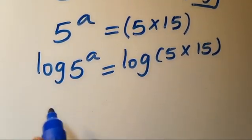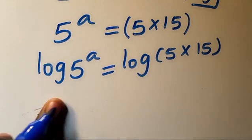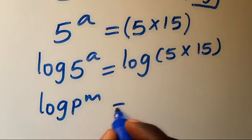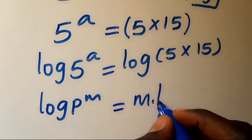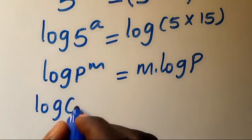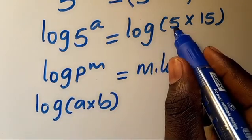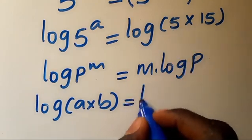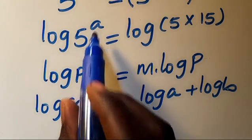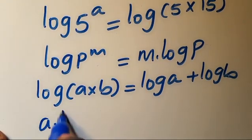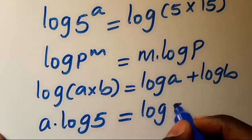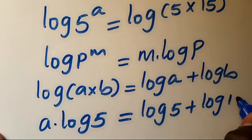From here, recall that when we have log of p to the power of m, that power m comes down to give m multiplied by log p. Also, log of a times b equals log a plus log b. Applying both rules: a multiplied by log 5 equals log 5 plus log 15.